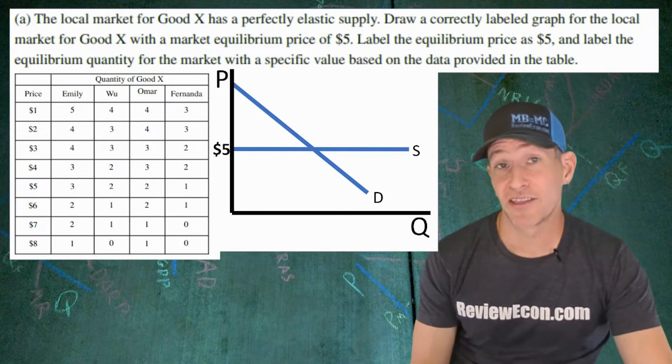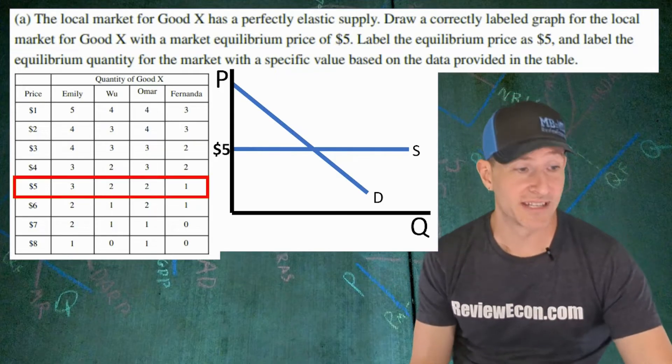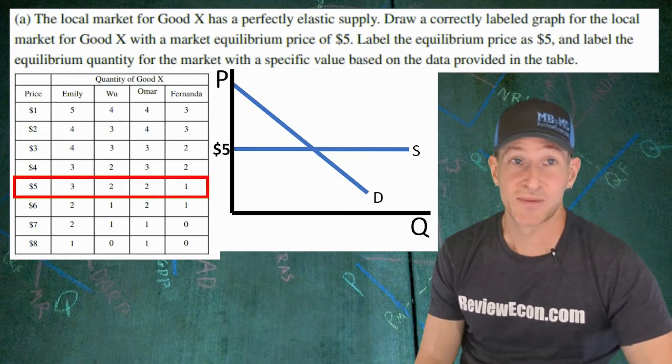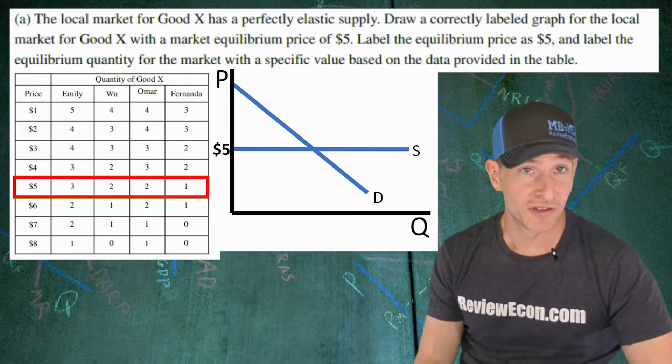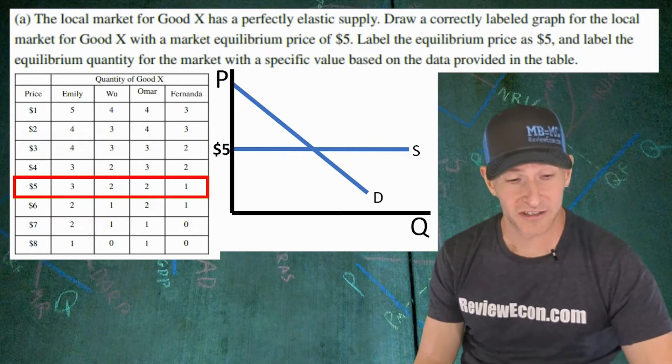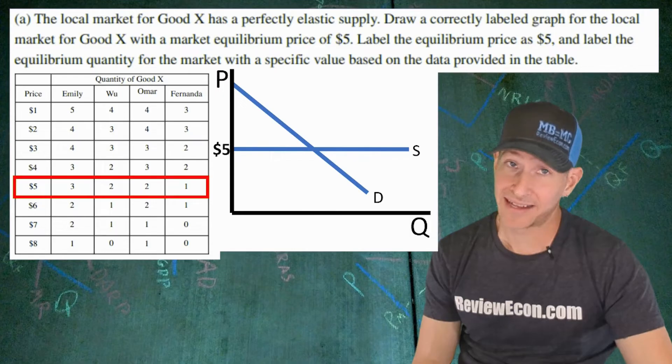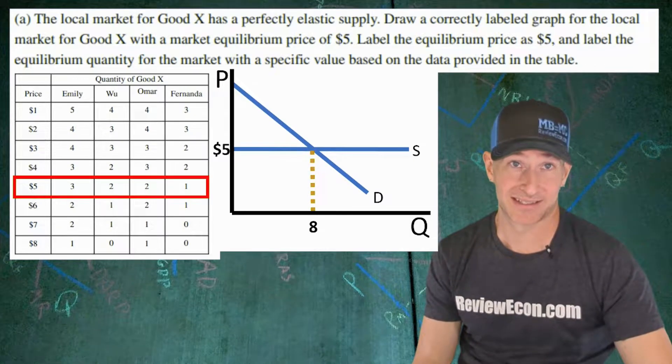To get the second point, we're going to have to identify the correct quantity. In order to find the equilibrium quantity, we have to look at the numbers on the table. We see that Emily is willing to consume three units at $5, Wu and Omar are willing to consume two units at $5, and Fernanda is willing to consume one unit at $5. Add those all together, three plus two plus two plus one, and that tells us the equilibrium quantity at $5 is eight units.